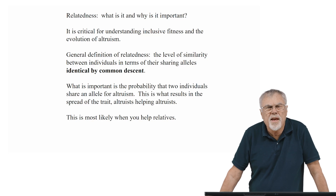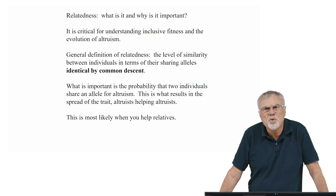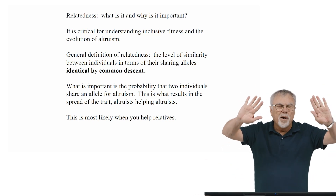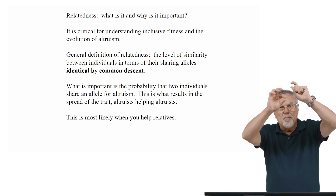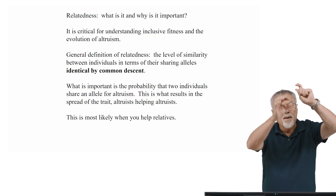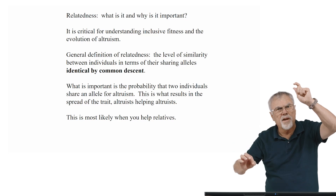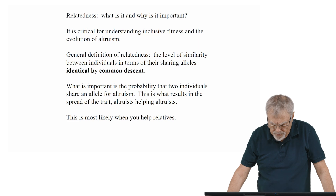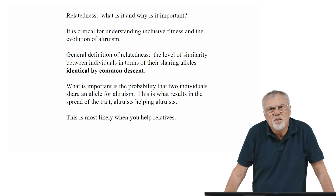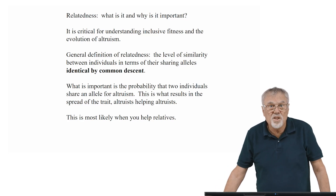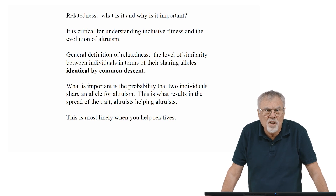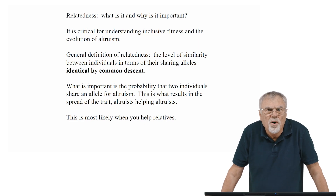It is critical for understanding inclusive fitness and the evolution of altruism. The general definition of relatedness is the level of similarity between individuals in terms of their sharing alleles identical by common descent. That common descent can go back to grandparents or great-grandparents — somewhere along the way an allele in one of the ancestors got passed down to one individual through one chain or path and down to the other through another inherited chain or path. The most important part is that this is related to the probability that two individuals share an allele for altruism. That's how altruistic traits spread — the trait of altruism helps altruists, and that occurs most likely when you help relatives.